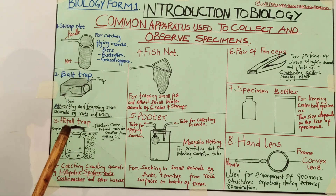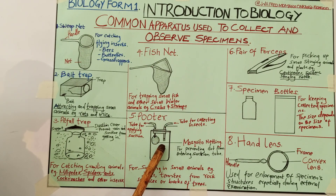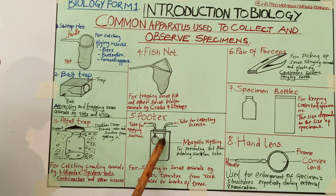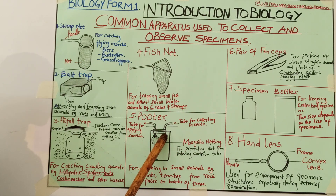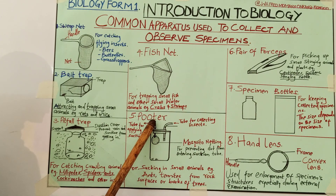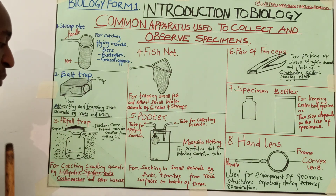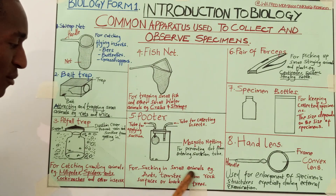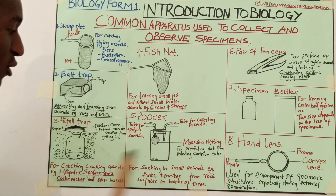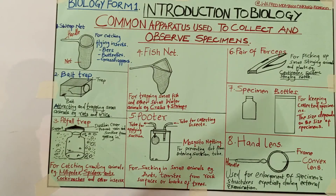You must be very keen on the parts of these apparatus. After the mosquito netting, we have replacements. You must indicate that. There are two arrows: one shows you the collection of the specimen entering the collection tube, and the other shows suction from the tube that passes through the mosquito netting outwards. The function of the pooter is for sucking small animals such as ants and termites from rock surfaces and barks of trees.